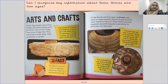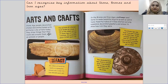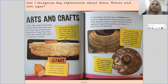Stone Age people decorated stones and animal bones with pictures, like artists today. They drew things they could see around them, such as animals or people. This picture of a horse's head drawn on a bone is one of the oldest pieces of Stone Age art found in Britain — it's probably about 12,500 years old. The oldest art found on Earth is a zigzag line carved into a shell; it is over 400,000 years old.